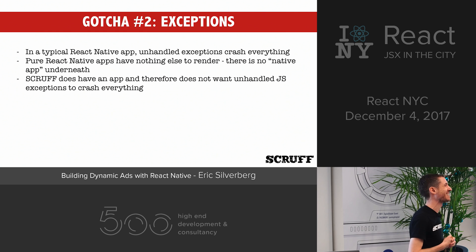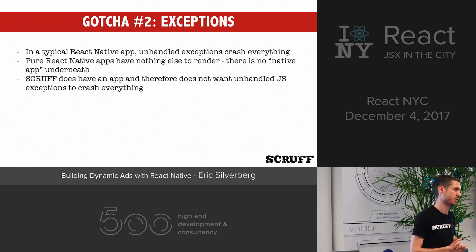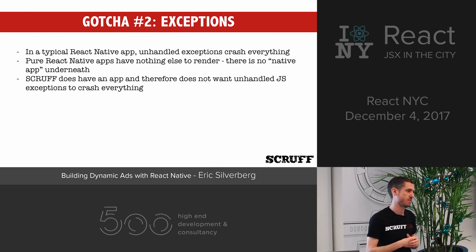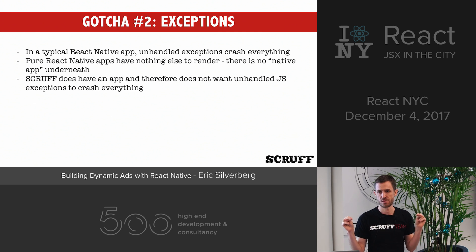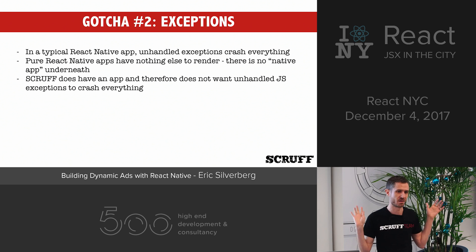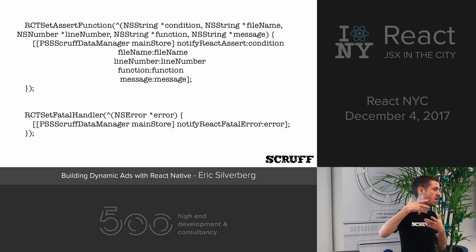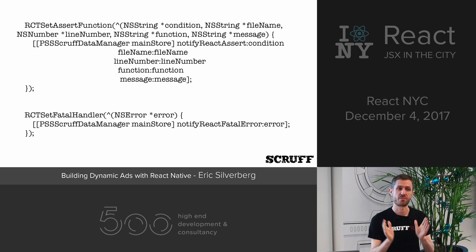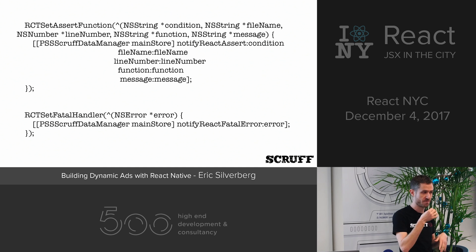The second gotcha has to do with exceptions. Typically in a pure React Native app, if there is an unhandled JavaScript exception, you're going to crash — there's nothing you can do, and it'll take the whole app down. In our case, we have a fully functional native application running underneath, and if there's a problem rendering the React Native ad unit, we don't want to crash the app. We'd rather just hide the ad unit. You can do this using macros that are part of React Native on iOS. In the face of an assertion or fatal error, we capture that and send a notification using NSNotification on iOS and an event bus on Android. If there is an actively drawn React Native view controller or activity, we just close it.